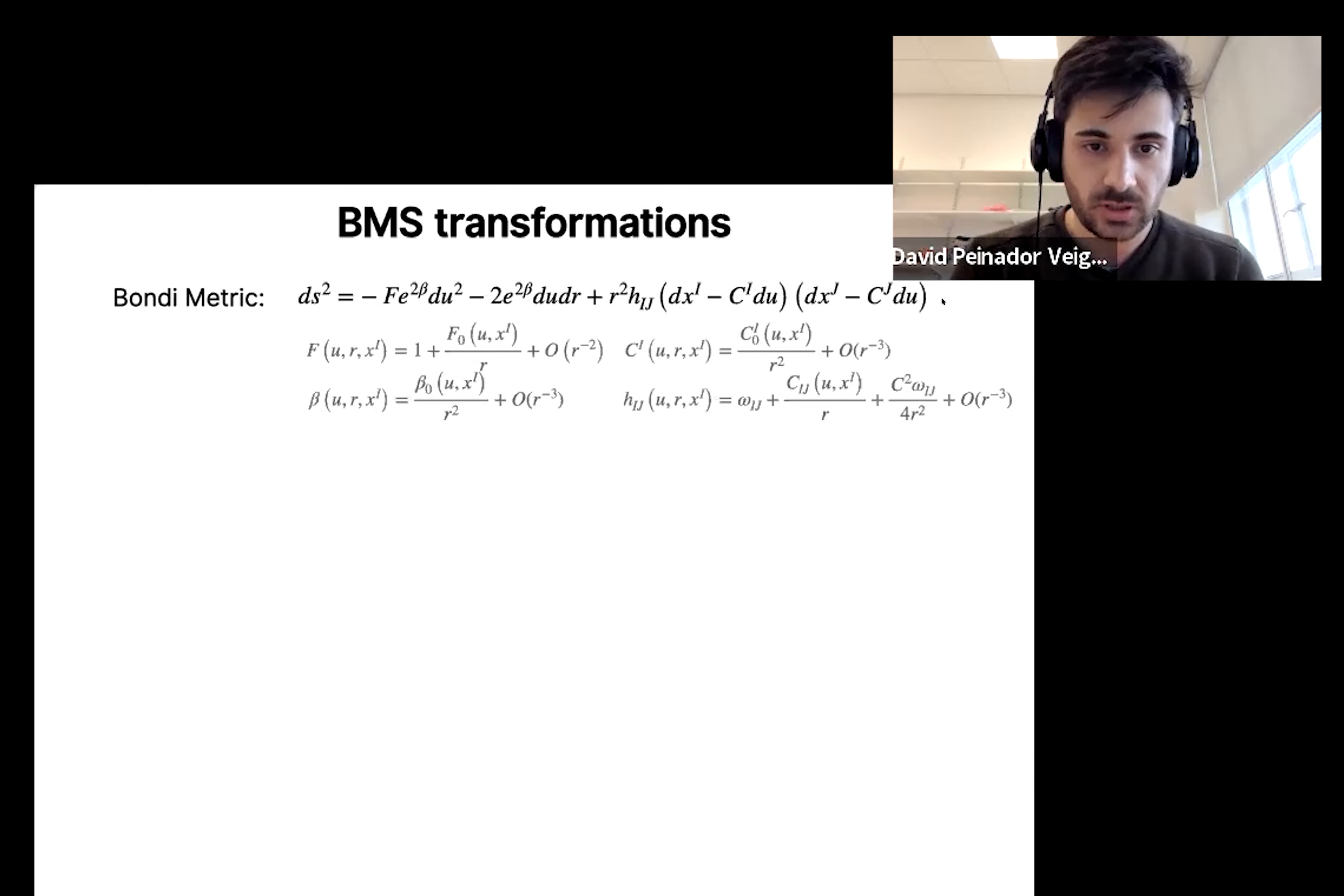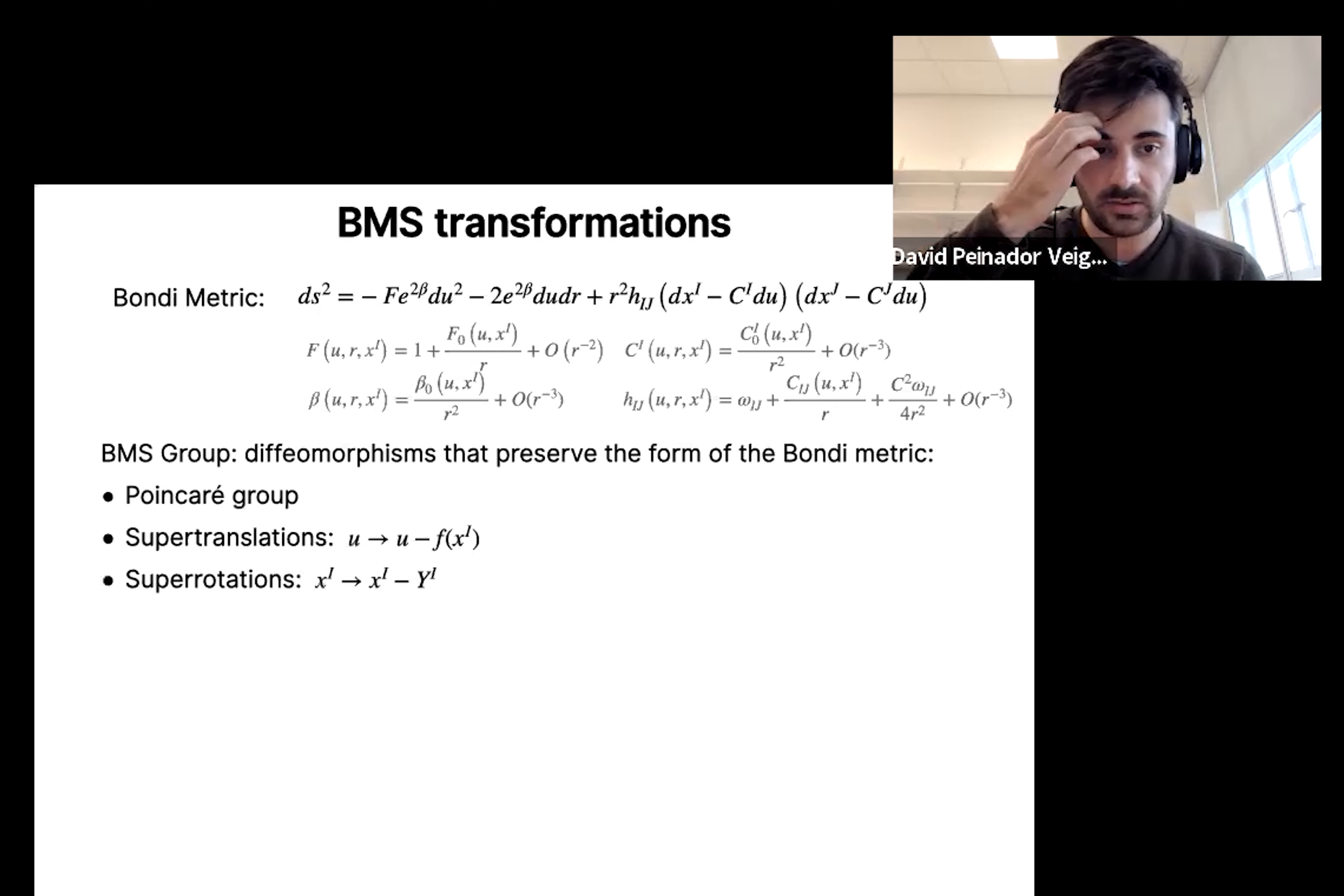Now, if you have a metric in this form, you can study which diffeomorphisms preserve the Bondi form of the metric. So even though the coefficients themselves, they might change, you can still have the same expansion in 1 over r. If you do that, then what you get is the BMS group. Basically, you have the Poincaré group, which of course acts trivially, but then you also have some new transformations.